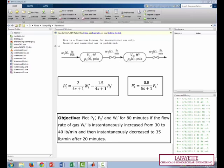So our objective today is to plot P1 prime, P2 prime, and Wi prime for 80 minutes if the flow rate of gas, Wi, is instantaneously increased from 30 to 40 pounds per minute, and then instantaneously decreased to 35 pounds per minute after 20 minutes.